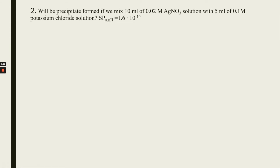Problem number two: will a precipitate be formed if you mix 10 mL of 0.02 mol/L silver nitrate solution with 5 mL of 0.1 mol/L potassium chloride solution? The solubility product is given. We will use the same approach as in the previous problem — we calculate the concentration product, which equals the concentration of silver multiplied by the concentration of chloride.